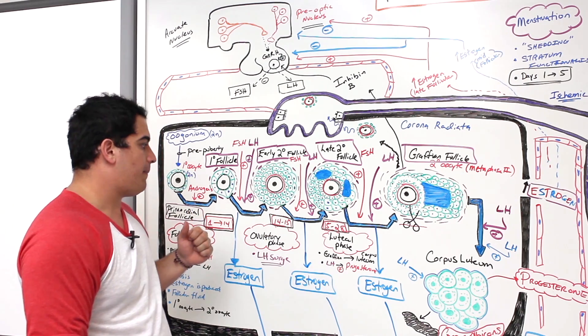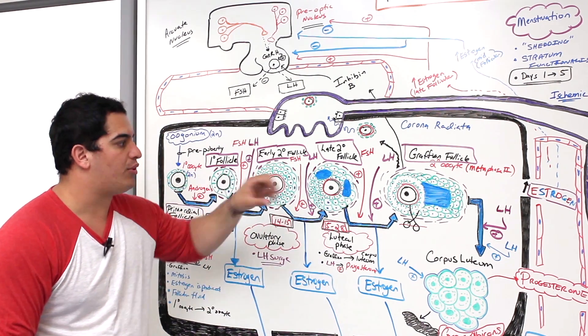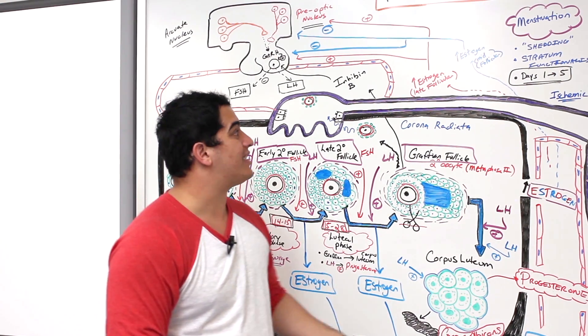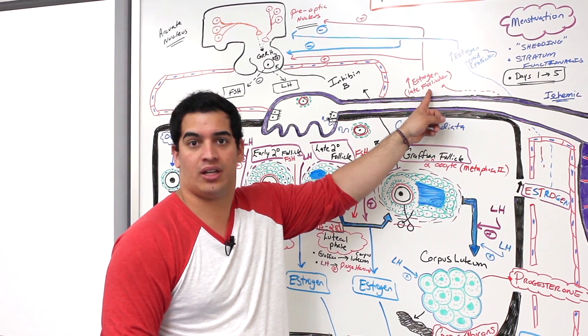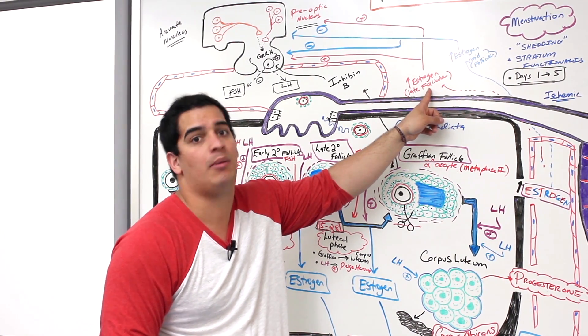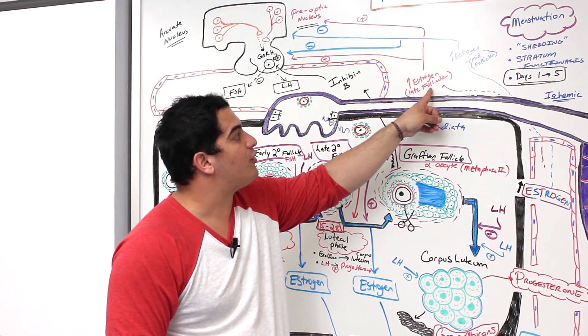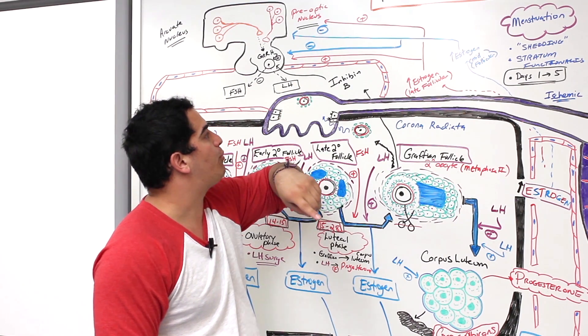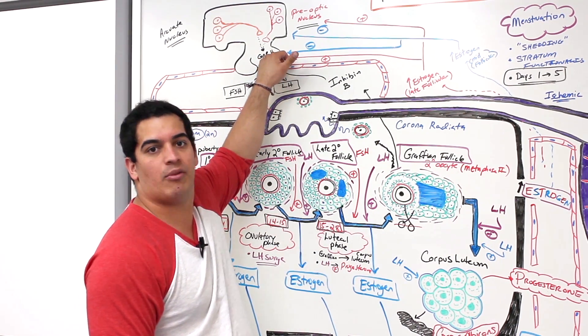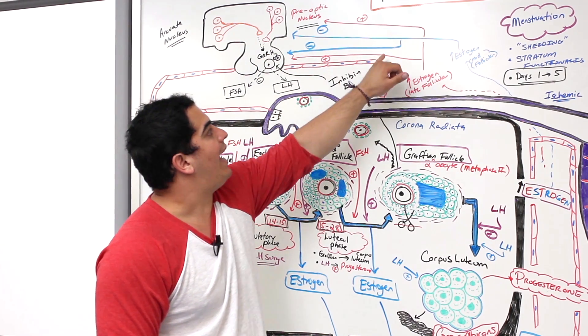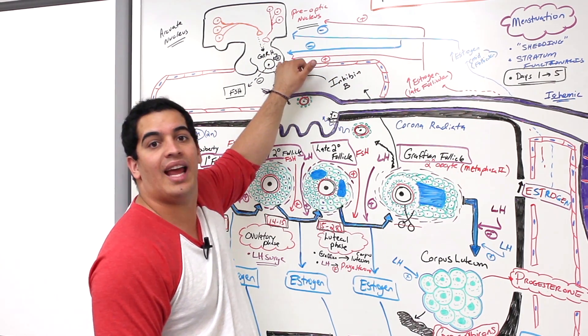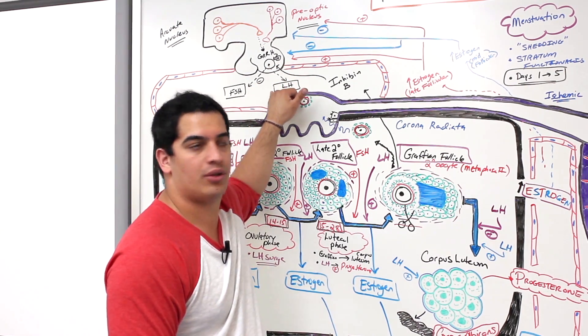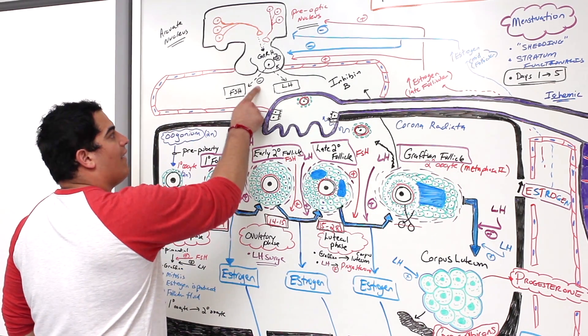But guess what? The graafian is still producing large amounts of estrogen, and these estrogen levels rise again towards the late part of the follicular phase, like day 13, day 14, maybe even day 15. As those estrogen levels rise again, look what happens. They do something really funky: they stimulate the pre-optic nucleus and the arcuate nucleus to release massive amounts of GnRH, and they stimulate the anterior pituitary to release massive amounts of FSH and LH.